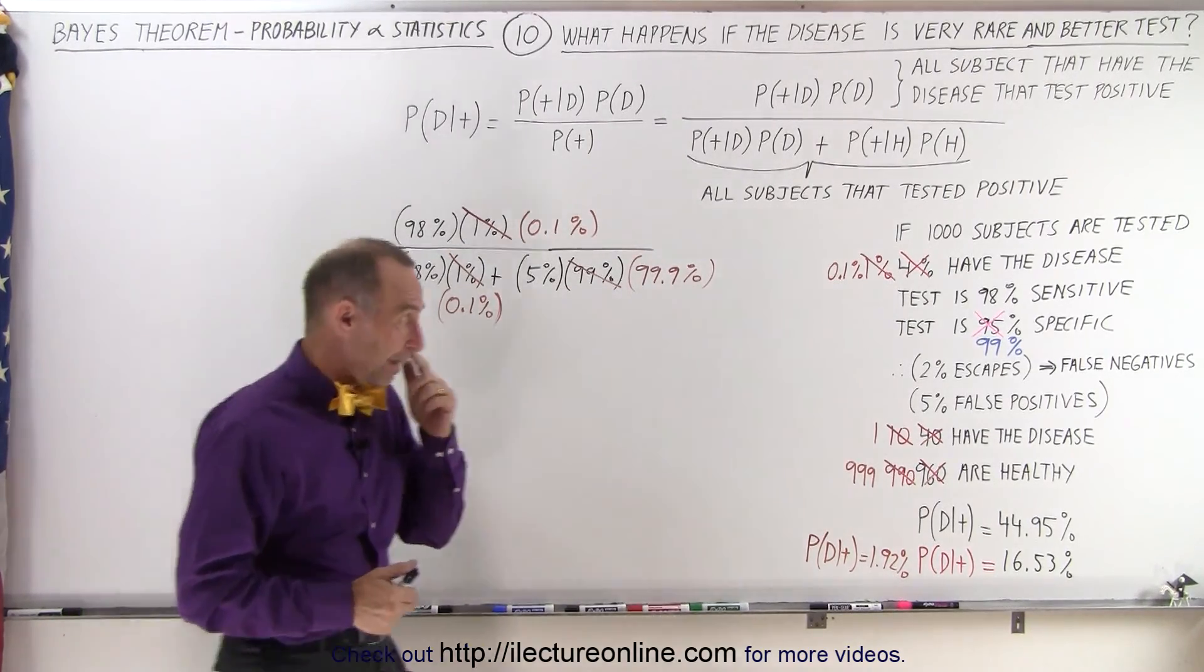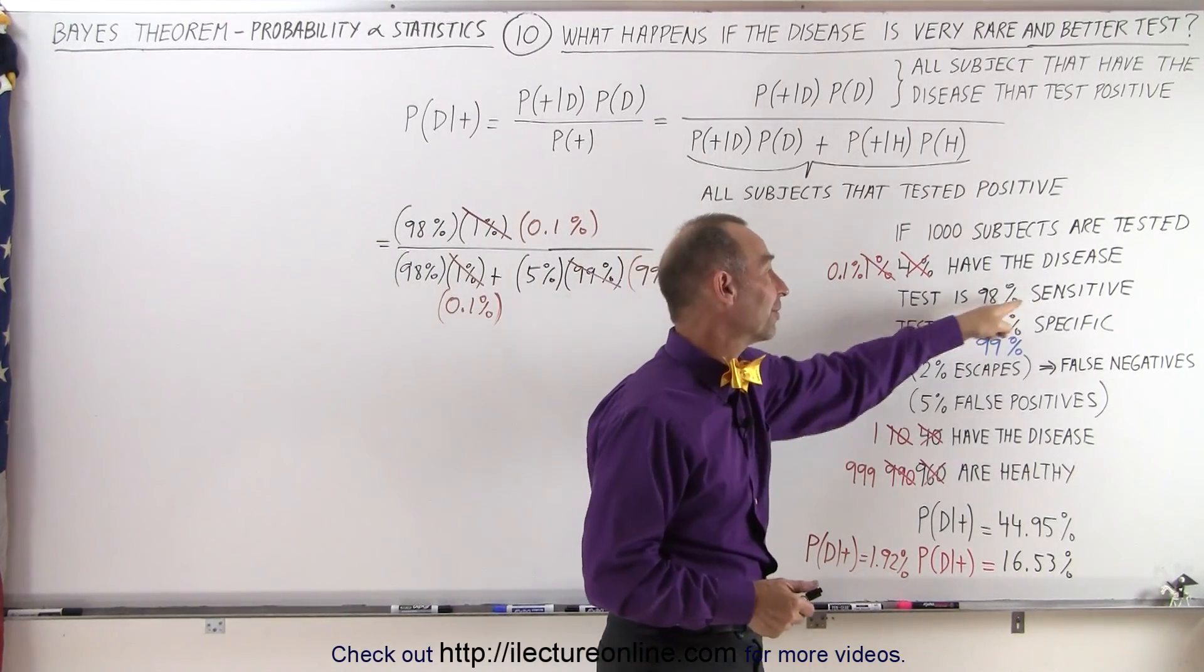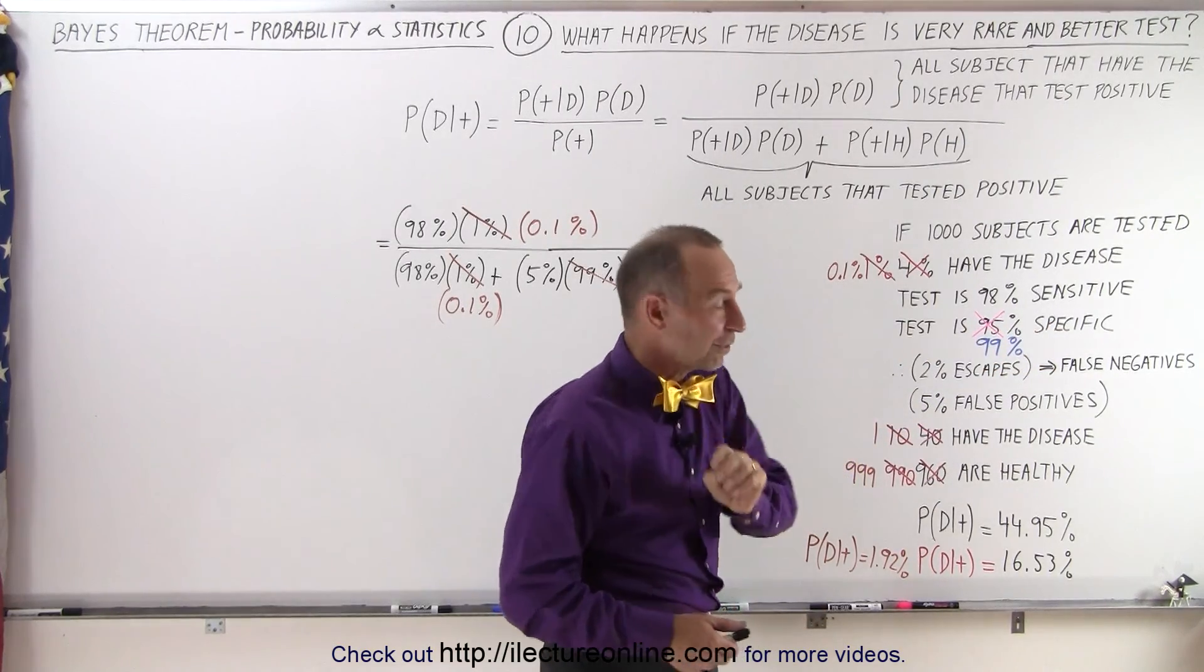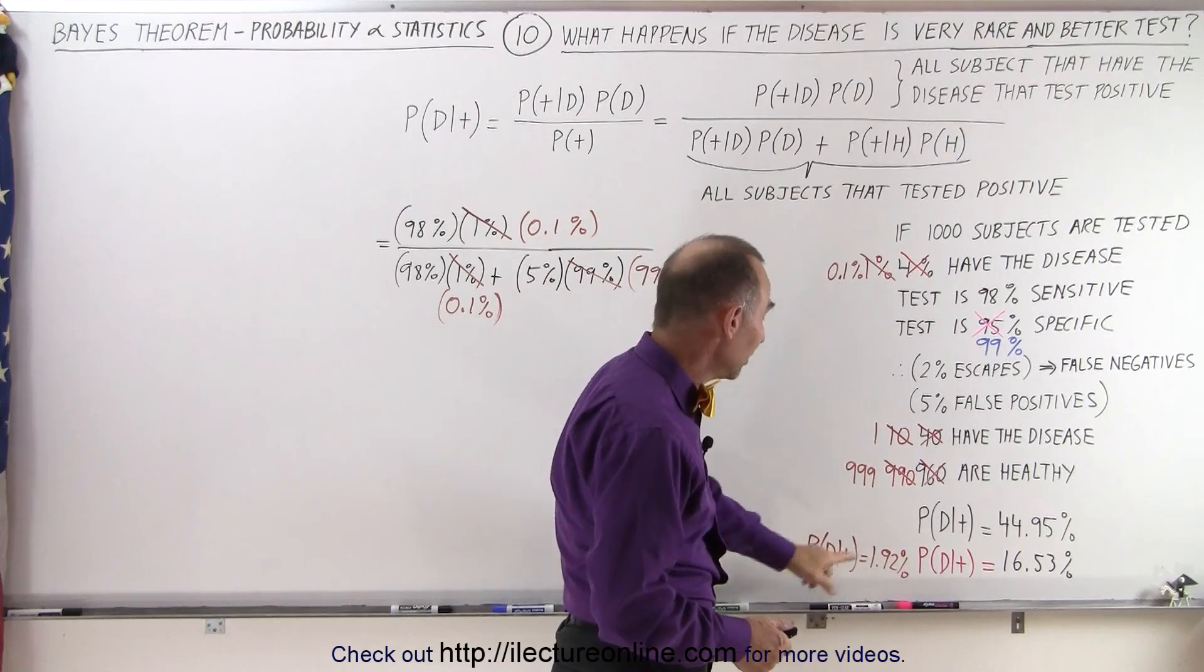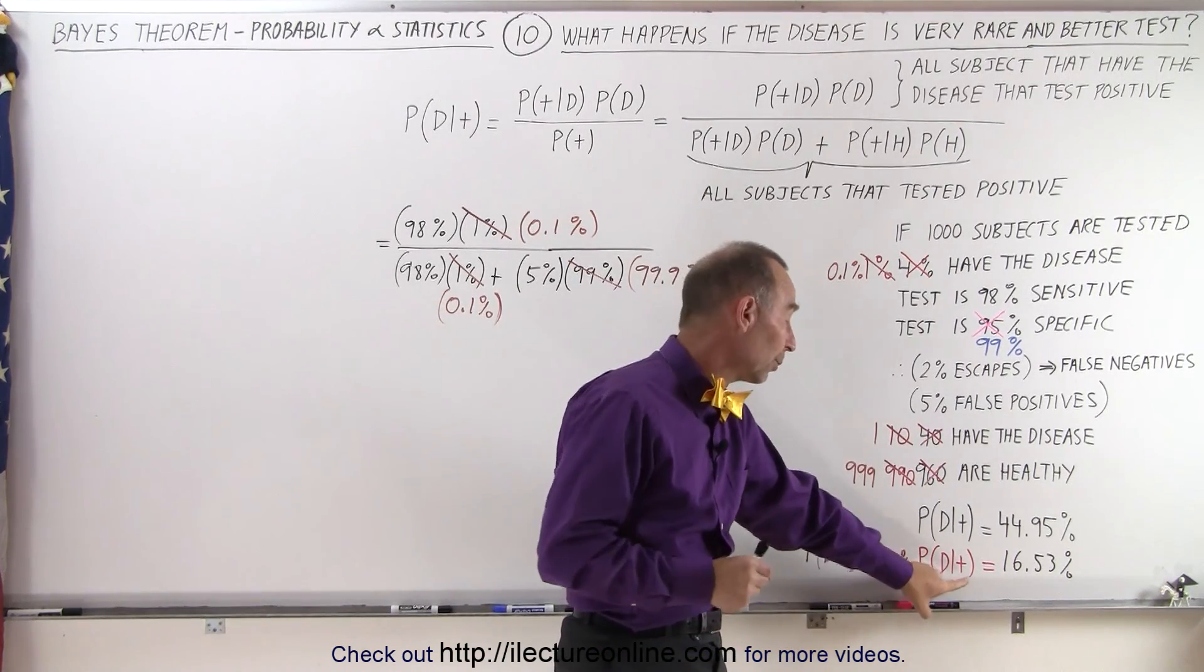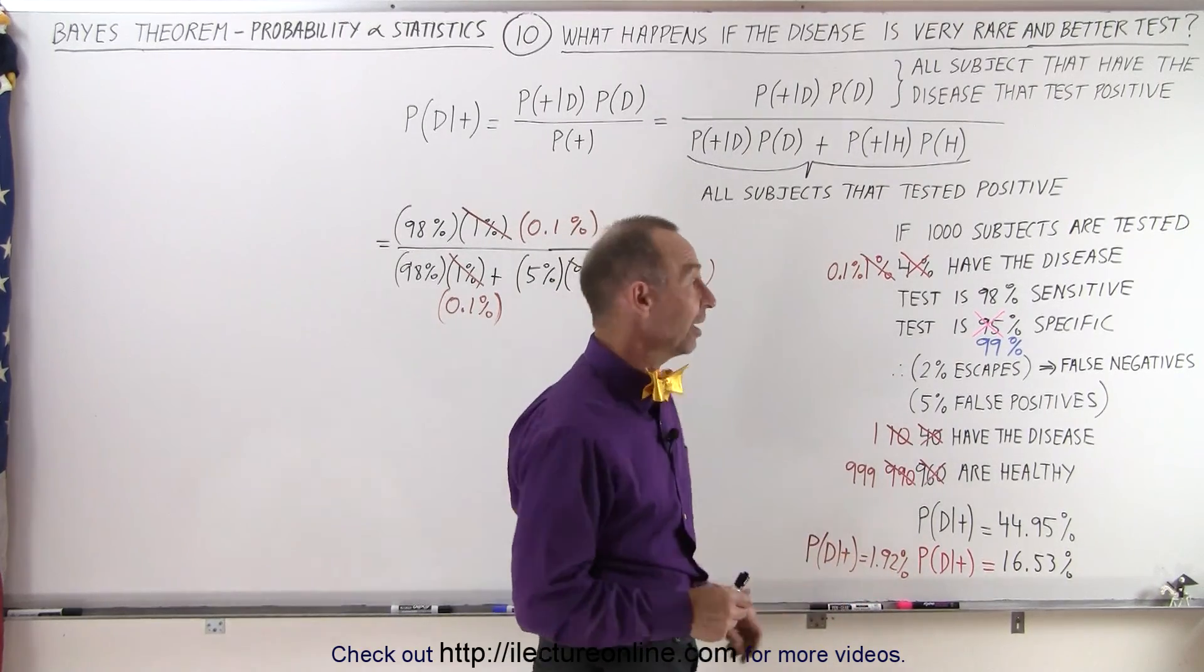And if the parameters of the test aren't that spectacular, if the test has a sensitivity of 98 percent and a specificity of 95 percent, with those rarity of the condition, one out of a thousand, the probability that the subject has the disease when they were tested positive dropped all the way down to 1.92 percent.